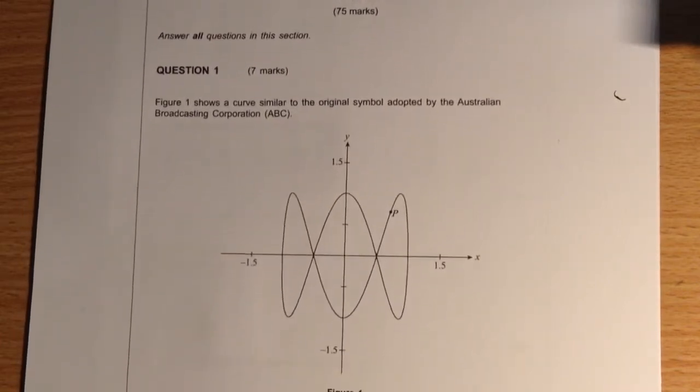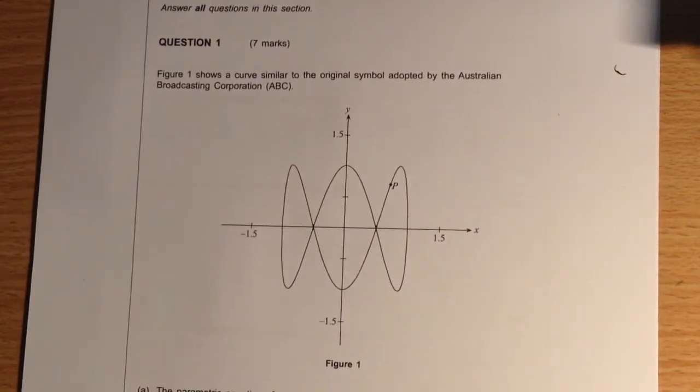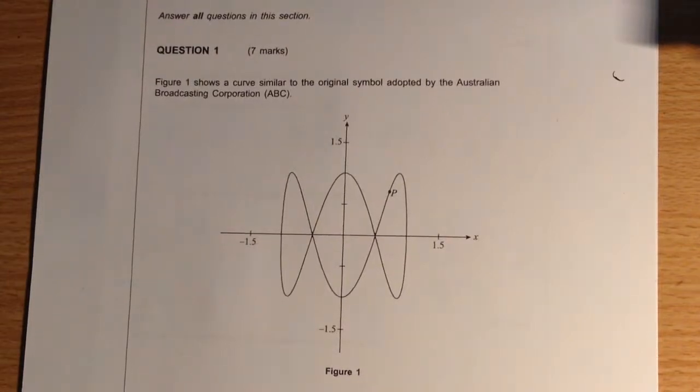So as you can see here, we're introduced to a figure which represents a graph that is described by parametric equations. And we can see that it is similar to the original symbol that was adopted by the Australian Broadcasting Corporation, the ABC.